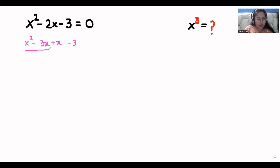Now, from the first two terms, I can take x common. So what is left? x minus 3.